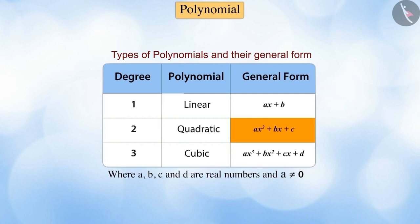Very good. The general form of a quadratic polynomial is ax² + bx + c.